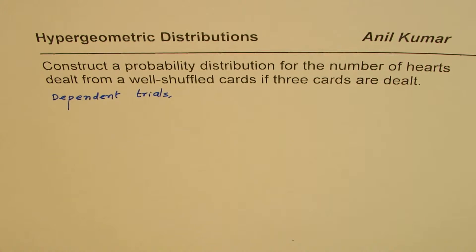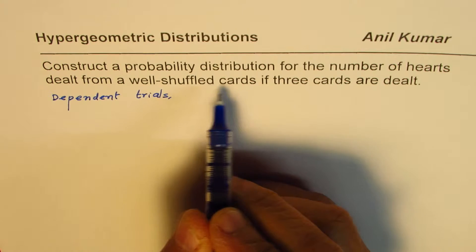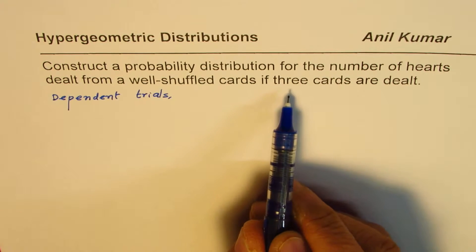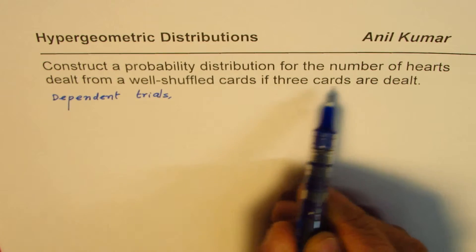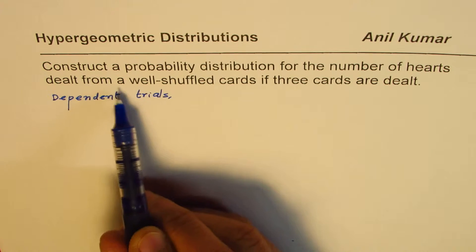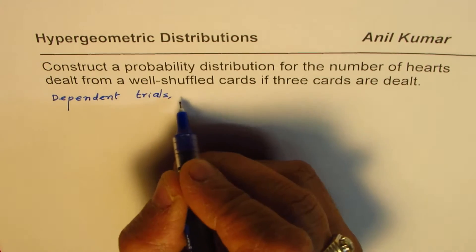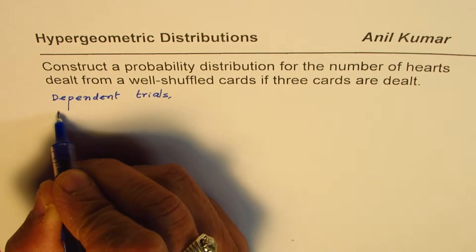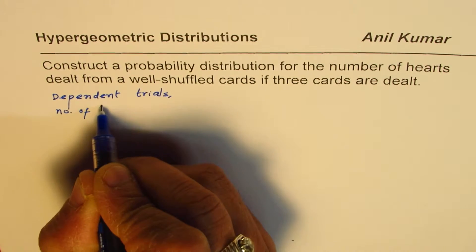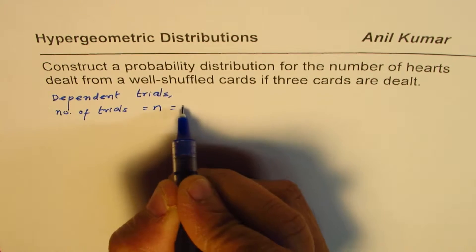Since there are dependent trials, the probability doesn't remain constant — it changes. Now, to make it a random variable type of experiment, we look at what is required in our answer: construct a probability distribution for the number of hearts dealt from a well-shuffled deck if three cards are dealt. So this is a dependent trial where the number of trials is n, where n equals 3.